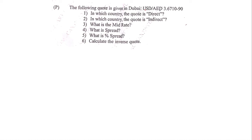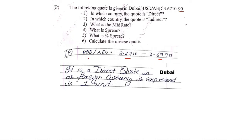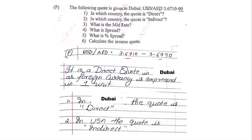The first question gives the following quote in Dubai: USD to AED is 3.6710–3.6790. In which country is the quote direct, and in which country is it indirect? USD to AED means 1 USD equals 3.6710 to 3.6790 AED — this is a direct quote in Dubai since the foreign currency is expressed per one unit. Therefore, the quote is direct in Dubai and indirect in the USA.